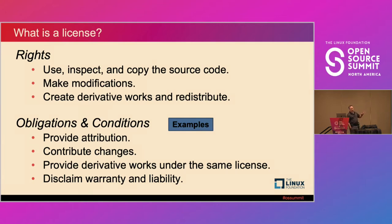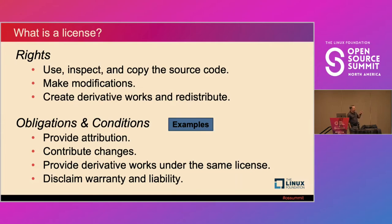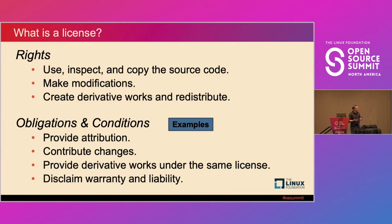Now, the obligations. Not every open source license has all of these obligations, and there are lots of other obligations not listed here — these are common examples. First: provide attribution. That simply means acknowledge that you didn't write the code — you got it from somewhere else. This is a very common obligation for what we call permissive licenses. Attribution — telling people where you got the code — is a very common obligation.